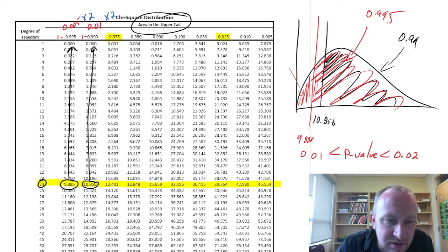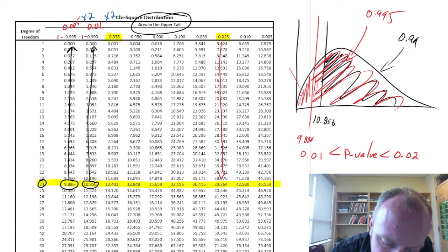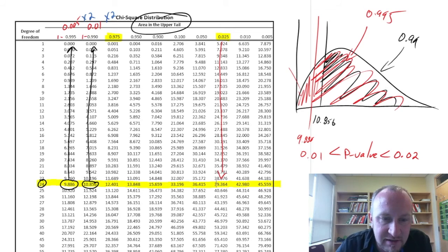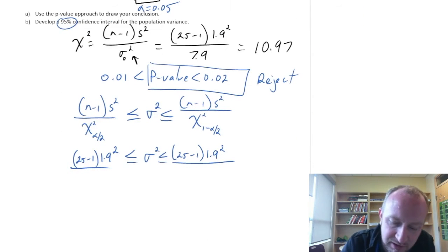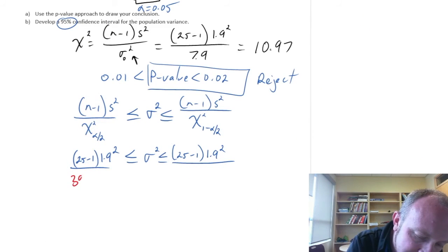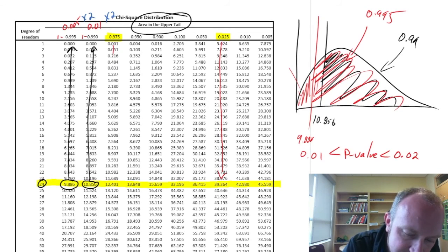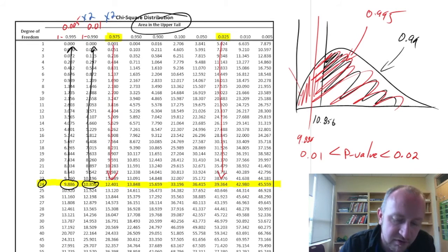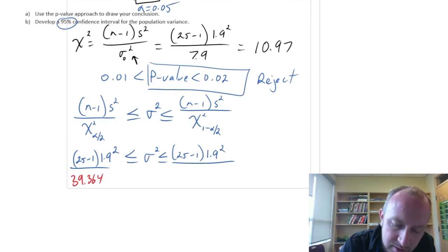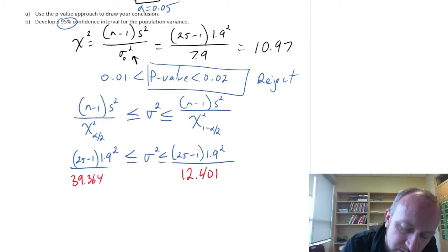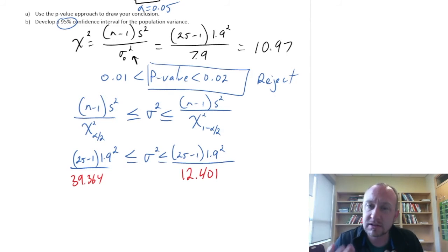And so my two critical values are going to be 39.364. Let me just bring that one over here. 39.364. And the other one will be, right down here, 12.401.